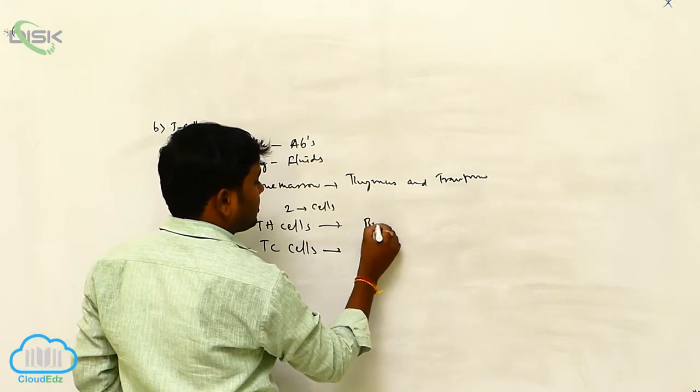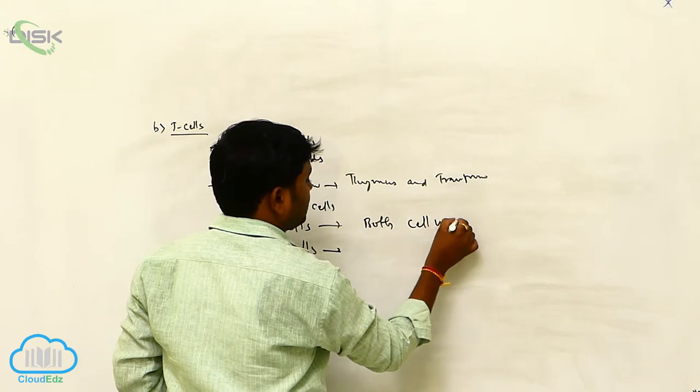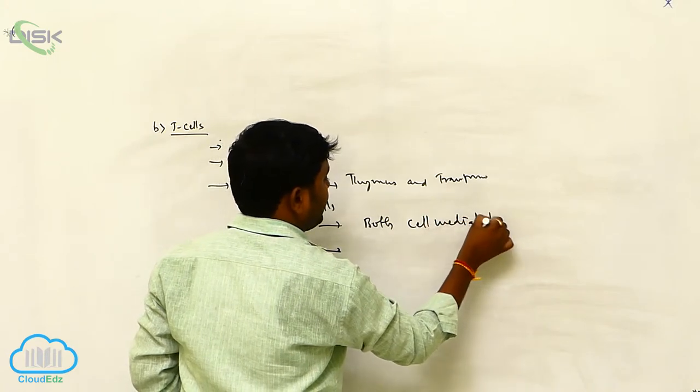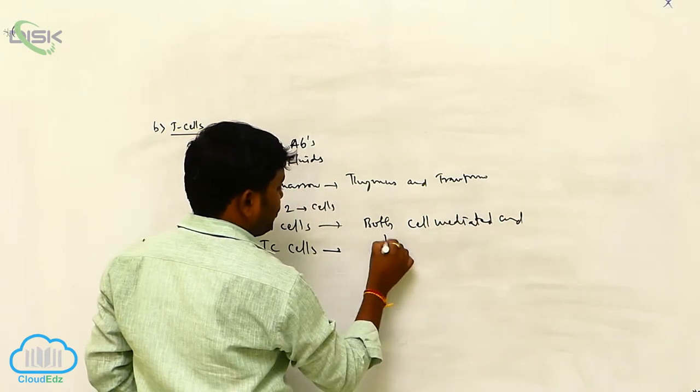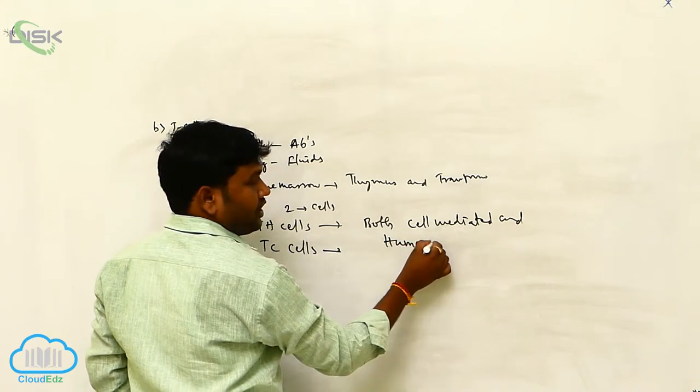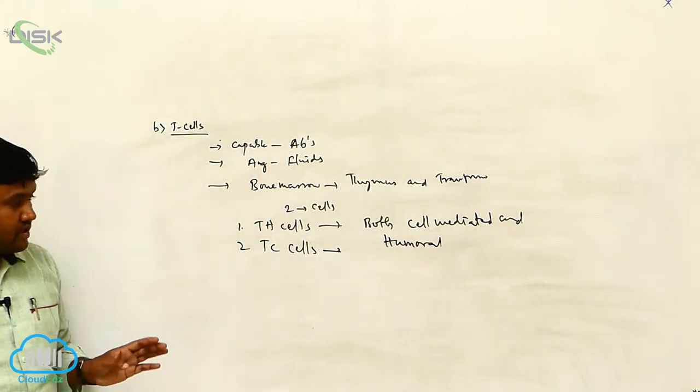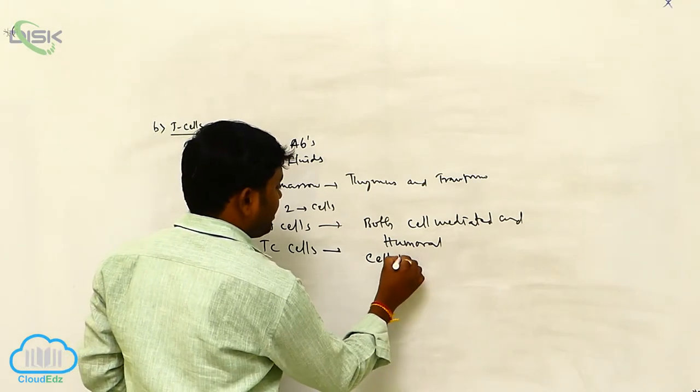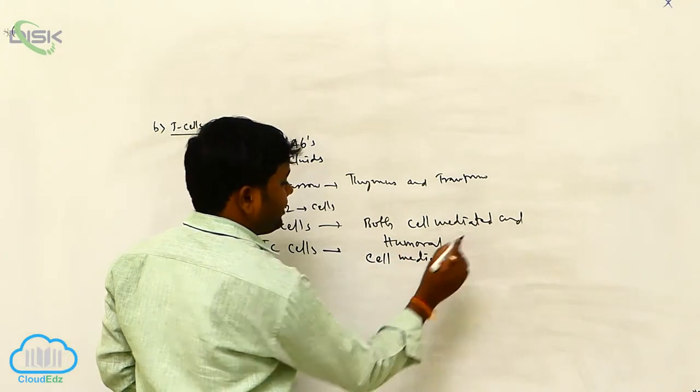TH cells are involved in both cell-mediated and humoral immunity, while TC cells are only involved in cell-mediated immunity.